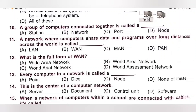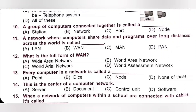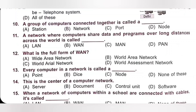Twelfth. What is the full form of WAN? A. Wide Area Network, B. World Area Network, C. World Aerial Network, D. World Assessment Network. WAN means Wide Area Network. Option A is the correct answer. Thirteenth. Every computer in a network is called a dash. A. Point, B. Dice, C. Node, D. None of these. Every computer in a network is called a node. Option C is the correct answer.